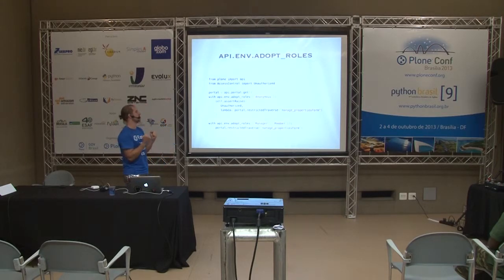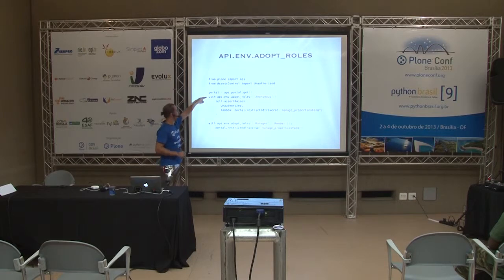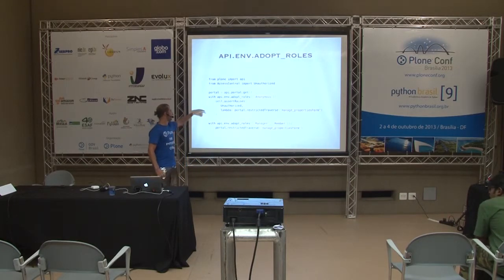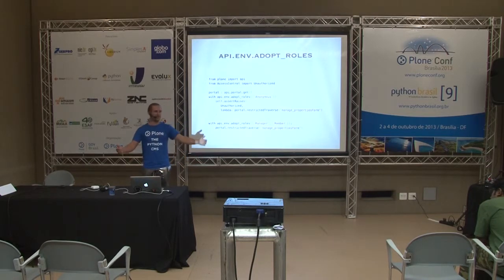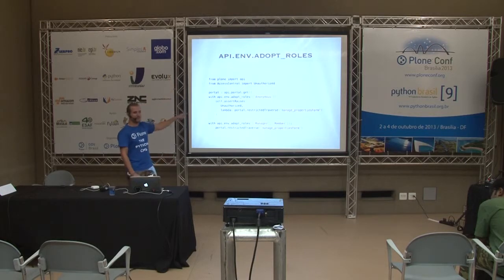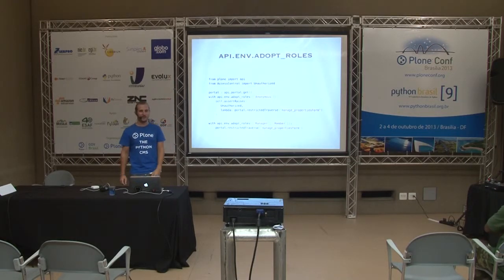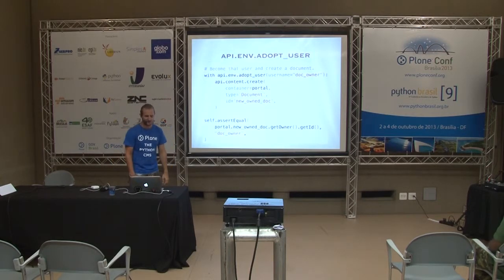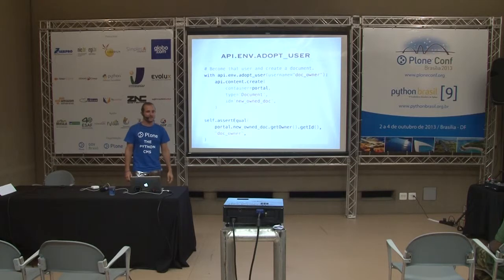adopt_roles is just amazing for testing, because you can use it as a context manager with 'with'. You would say: I now want to be anonymous, go to this URL, and assert that there's an error. And then as a manager, there's no error. It's that much code in your test when you use Plone API. And the same with adopt_user: I want to be that user and I want to create content - done. For testing, did your test just shrink? A lot.